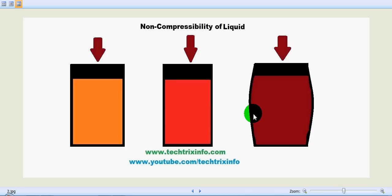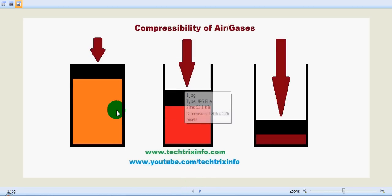This clearly shows that liquid is not compressible. That's why the piston is not moving down but the cylinder is getting bulged. In fluids, we have air/gas and liquid. Liquid is a non-compressible fluid, and air and gas are compressible fluids.